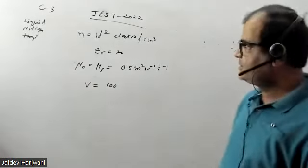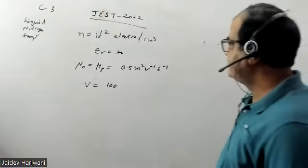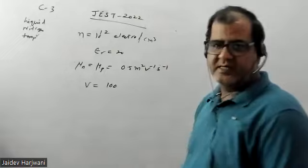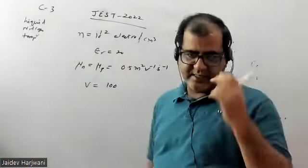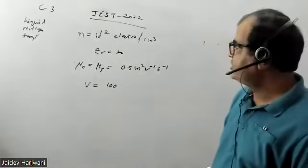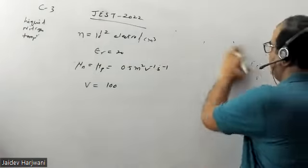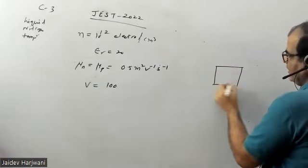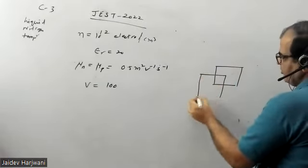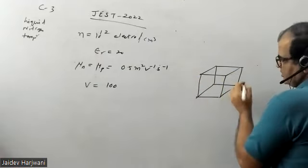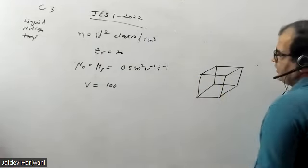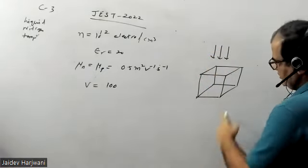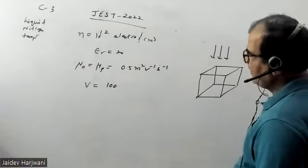Hello students, let us solve this problem from JEST 2022, question number C3. In this question, they are optically shining a semiconductor crystal which is in the shape of a cube, and they have given the dimension of the cube as one centimeter — so this is basically a one centimeter cube.